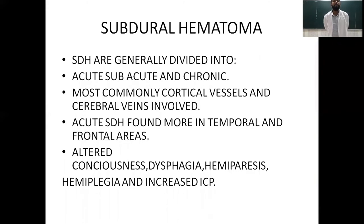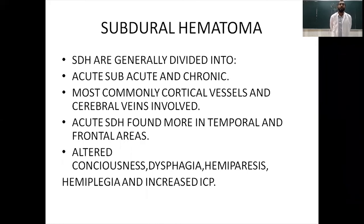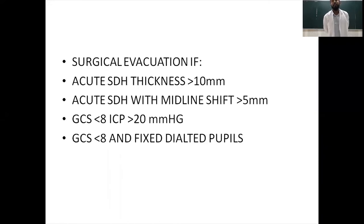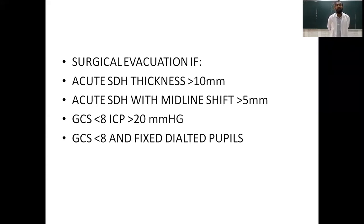Subdural hematomas are divided into acute, subacute, and chronic. They occur below the dura between the dura and arachnoid. The most commonly involved vessels are cortical vessels and cerebral veins. Acute subdural hematoma is found more in the temporal and frontal areas; patients present with altered consciousness, dysphasia, hemiparesis, hemiplegia, and raised ICP. Surgical evacuation is indicated if the acute SDH is greater than 10 mm in thickness, has a midline shift of 5 mm, GCS is less than 8 with raised ICP greater than 20 mmHg, or if the patient has fixed dilated pupils. Normal ICP is 7 to 15 mmHg.